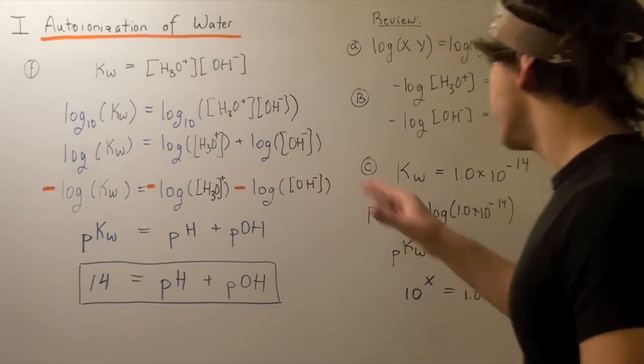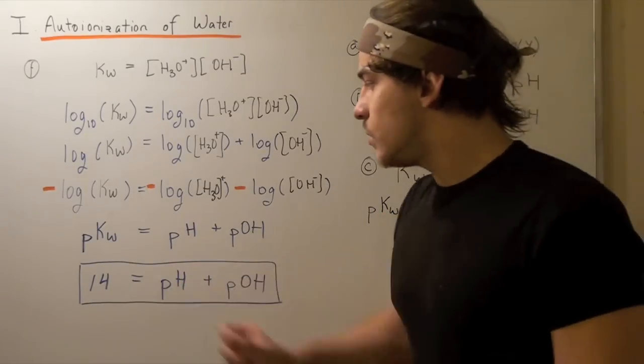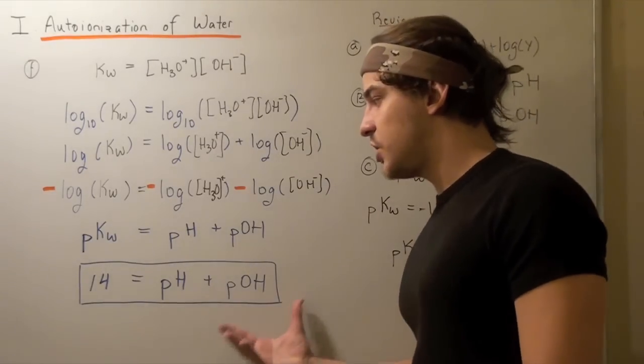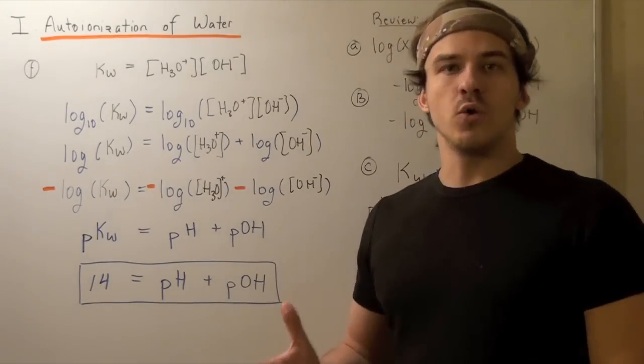From part C, I know that pKw is equal to 14. So this guy is equal to 14. And now this becomes very useful when I'm solving problems using pH and pOH.